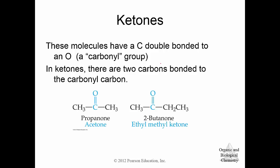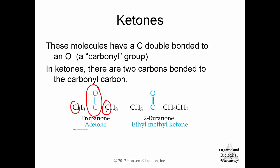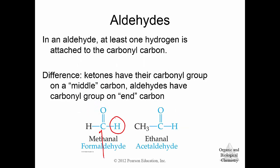Ketones have a C double bonded to an O, and watch out because there are several functional groups that have a C double bonded to an O — it could be a ketone, an aldehyde, or a carboxylic acid. What you'll notice about ketones is this carbonyl group has carbons on either side of it. That's what makes it a ketone and not one of those other functional groups. In an aldehyde, this carbonyl group has a hydrogen attached to that carbon. So a ketone is where you have that C=O in the middle of a molecule, and an aldehyde is where you have that double bond at the end of a molecule, with an H on one side. Otherwise they're very similar.